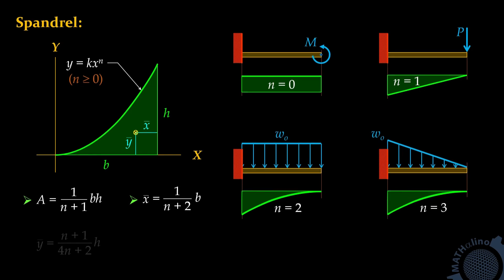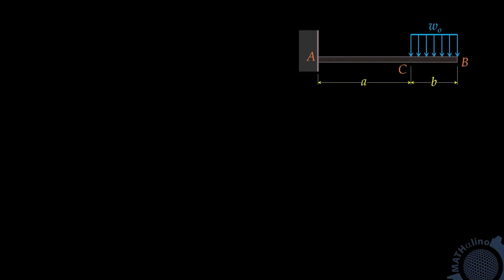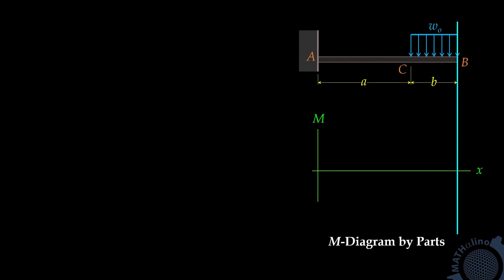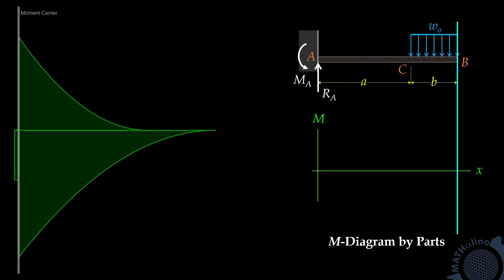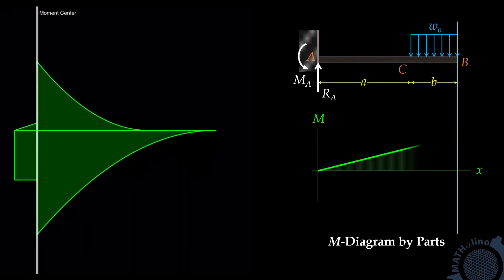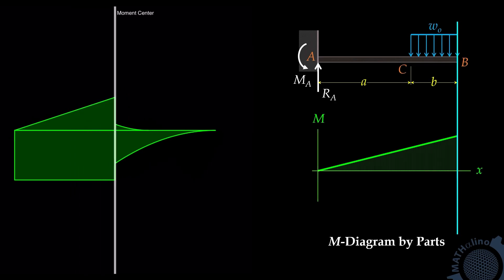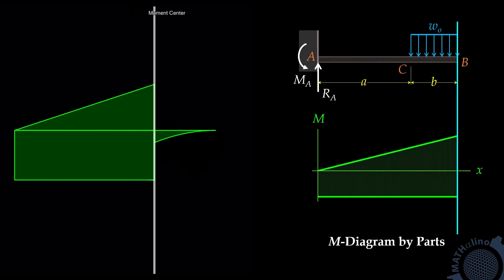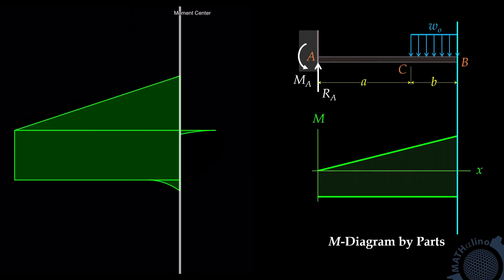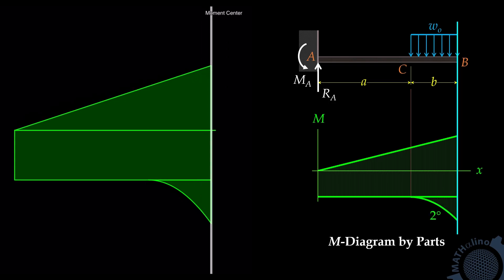Let us now go to our discussion. From the example of our previous video, we have this cantilever beam with uniform load near the end with length b. In that video, we took the free end as our moment center. With this moment center, we need to find the reactions at the support — reactions MA and RA. The moment diagram due to RA alone about point B is this triangle, and the moment diagram due to MA alone about point B is this rectangle.